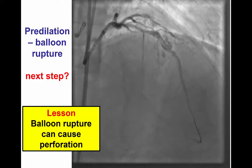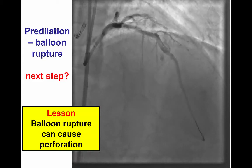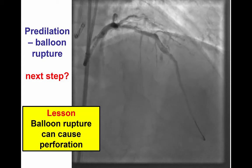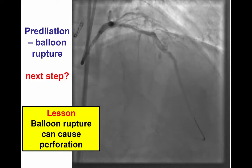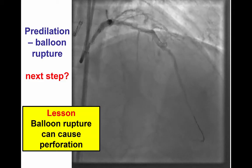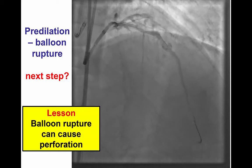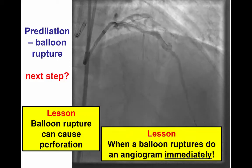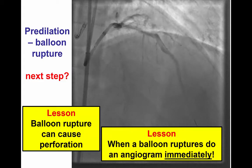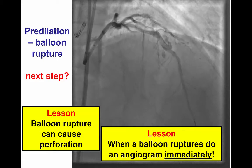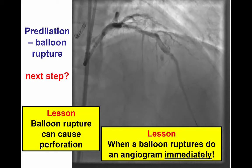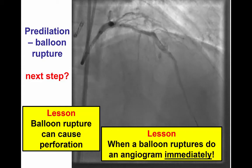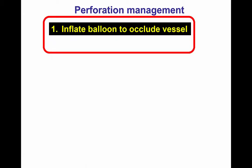The lesson here is that balloon rupture can cause perforation, and that is why when a balloon breaks, the first thing is to get the balloon out so there is no more air coming in, and the immediate next step is to image the vessel to make sure that no perforation has occurred. An angiogram should be done immediately because if you know about a problem, you can take care of it immediately. Otherwise, bleeding can go into the pericardium for a long period of time until we realize that the perforation has occurred.